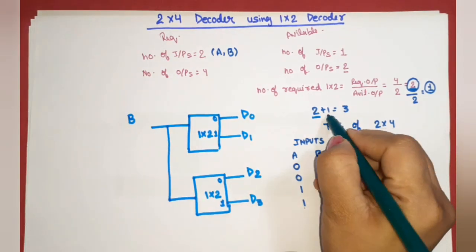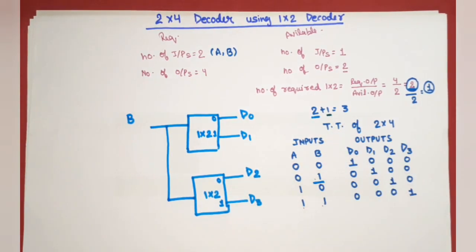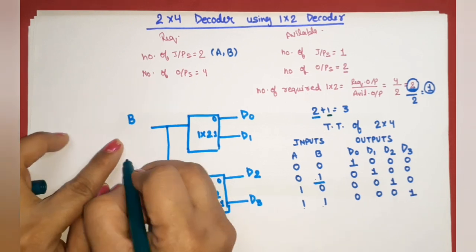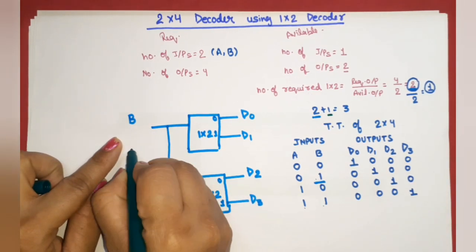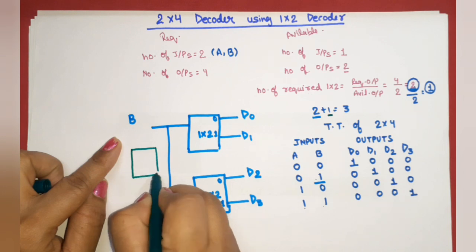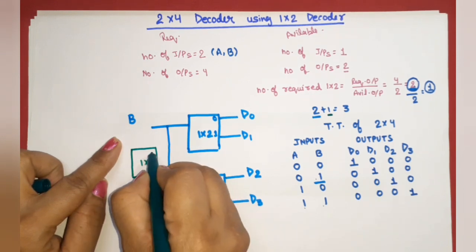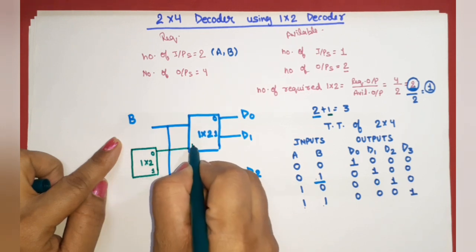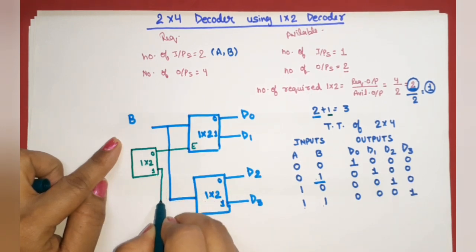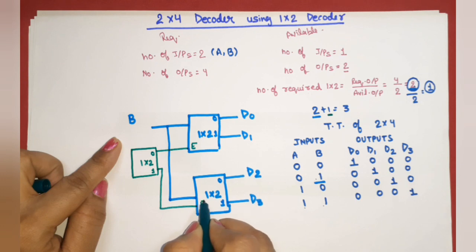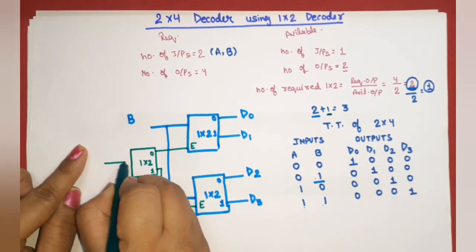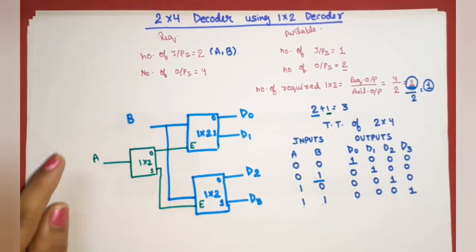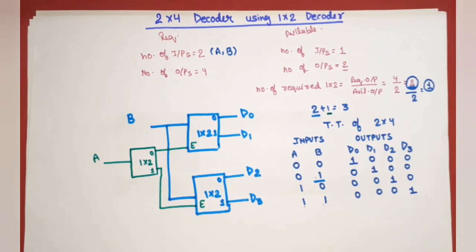There is one more decoder — the first level decoder — and there are two outputs from it: 0 and 1. Output 0 works as the enable for the first second-level decoder, and output 1 works as the enable for the second second-level decoder. Input A is fed into this first-level one-to-two decoder. This completes the block diagram of the two-to-four decoder using one-to-two decoders.